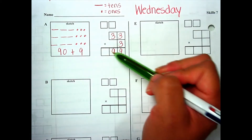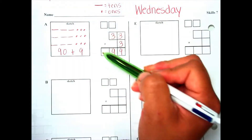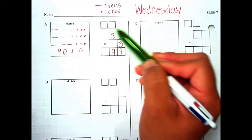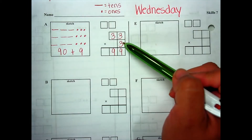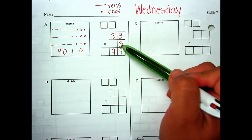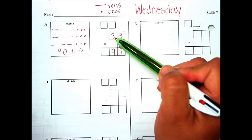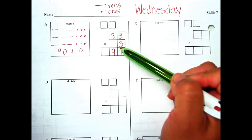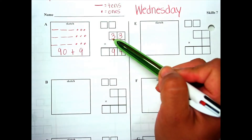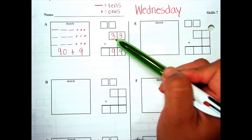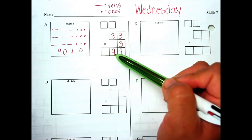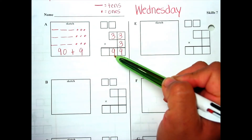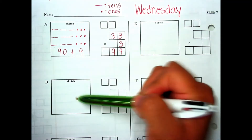When you're solving it this way and you're doing 3 times 3, you're actually doing 3 times 30. That is why you get 90, and that is why your nine is in the tens place.